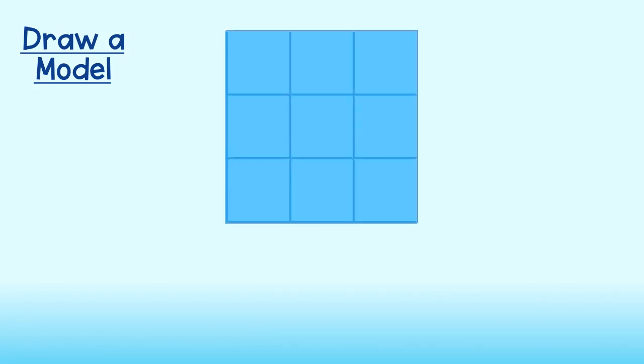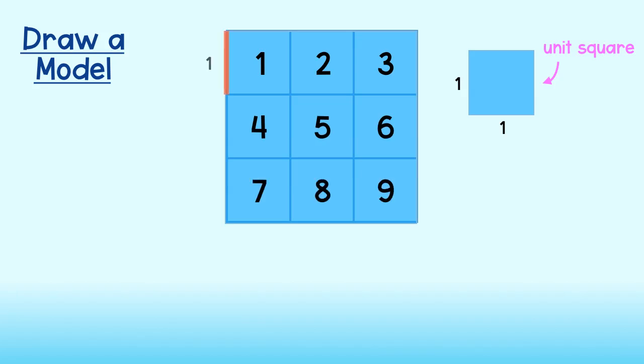Another approach is to draw a model. Think of a square filled with other squares, specifically unit squares, where the length and the width of these unit squares is 1. The large square is 9 square units. That's its area. This number can be found by multiplying its length times its width, or 3 times 3. This is also the same as squaring the length. 3 squared is equal to 9 square units.